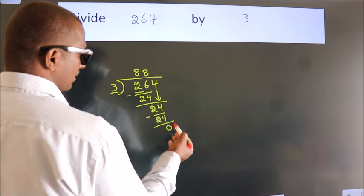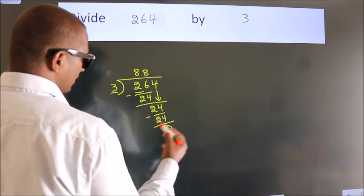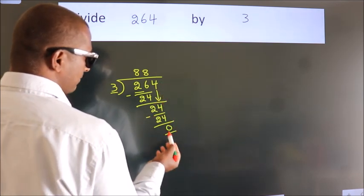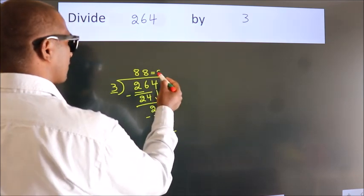After this, no more numbers to bring down. And we got remainder 0. So this is our quotient.